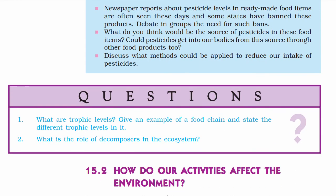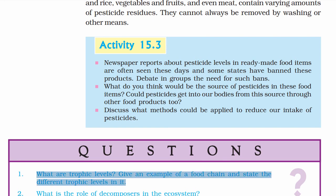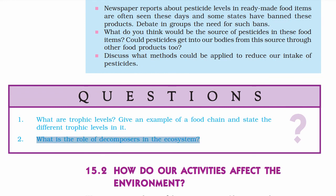Now we come to the end of this topic. The questions to consider are: What are trophic levels? Give an example of a food chain and state the different trophic levels. What is the role of decomposers in the ecosystem? In the next part, we will cover how our activities affect the environment.